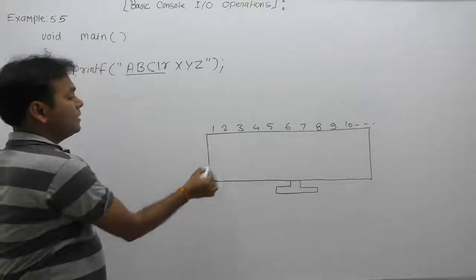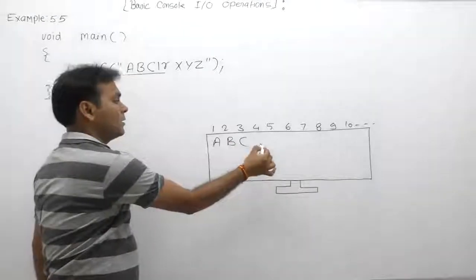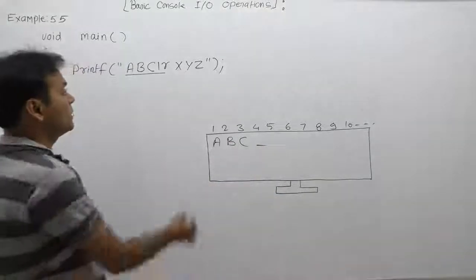As we see, according to that case it will print message as A, then B, then C. Now cursor will be available on the fourth position.